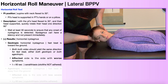Let's get into results interpretation. What constitutes a positive horizontal roll maneuver? That would be the reproduction of horizontal nystagmus, which can be classified as either geotropic or ageotropic. We're going to look at geotropic nystagmus first.